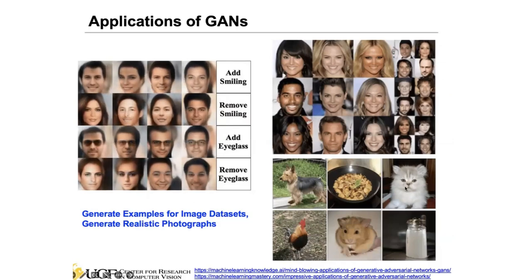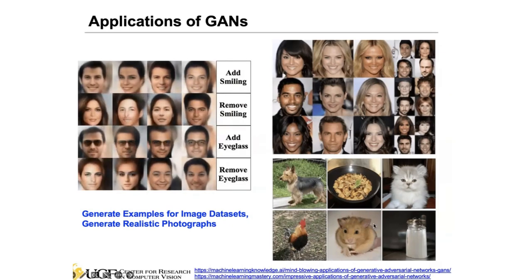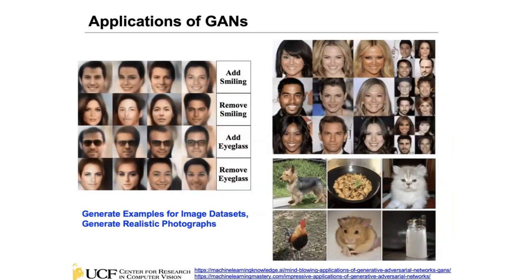Not just faces — we can also generate other natural images like dogs, dishes, or other objects. From these generated images you probably could not tell if they are real or fake, at least not at first glance. The dog image in particular — you really cannot tell it's a fake image. That shows how realistic GANs can be.